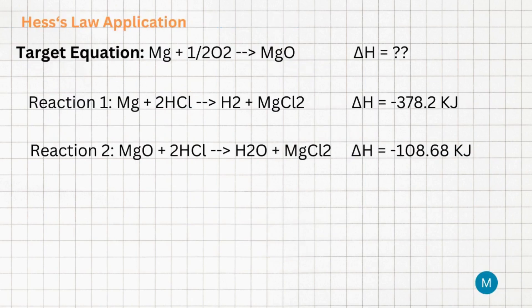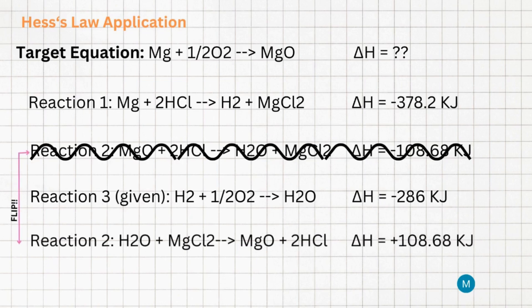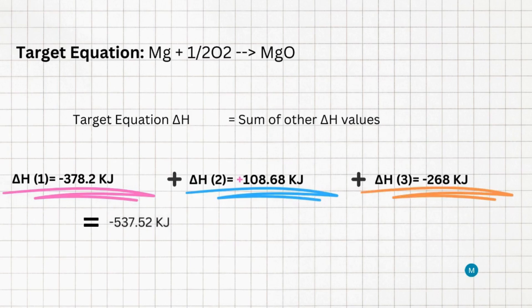We have now calculated our delta H value for the two equations and used them to determine the enthalpy change of our target reaction through Hess's law. To do this, we are also given a third reaction with a delta H of negative 286 kilojoules. Abiding by what we have learned about Hess's law, we can see that we must flip our second equation in order to properly align our reactants and products. This will also change our delta H value to positive 108.68 kilojoules. Now we can simply cross out our products and reactants from different equations until we have reached our target equation. Finally, we can solve for our delta H value of our target reaction by adding the sum of our given reactions. So we add our delta H value of reactions 1, 2, and 3 to reach our final value of negative 537.52 kilojoules. This is our enthalpy change of the reaction magnesium plus half O2 makes magnesium oxide.